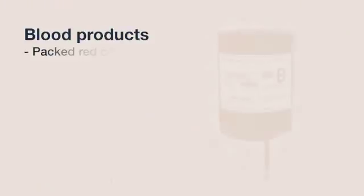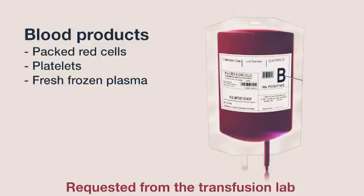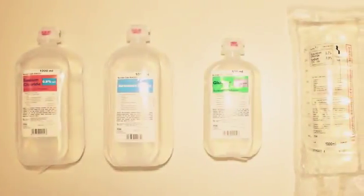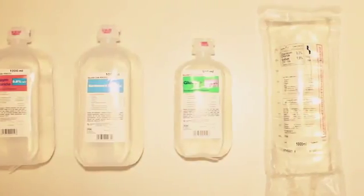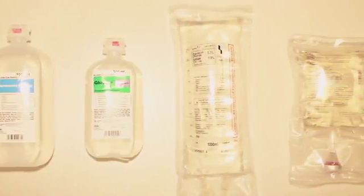The final type of fluid is blood products, which include packed red cells, platelets and fresh frozen plasma. These products need to be ordered from the transfusion lab and their use and administration must follow local protocols. For the remainder of this video, we will focus purely on the administration of crystalloid and colloid solutions.